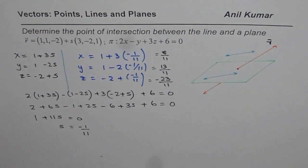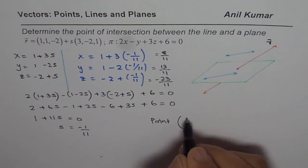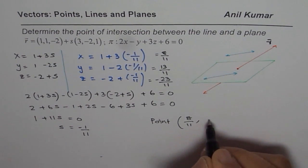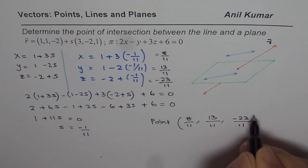And therefore, the point of intersection is 8 over 11, 13 over 11 and minus 23 over 11.